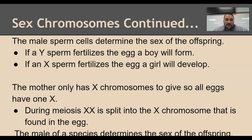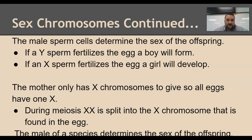The mother only has X chromosomes, so because she has two X's she either gives an X or an X — so every single egg cell the mother produces has an X chromosome. During meiosis, you go from a diploid cell having two copies of every chromosome to a haploid cell having only one copy. No matter what, that egg cell has an X chromosome. During meiosis we go through a second round of division, ending up with two X-chromosome sperms and two Y-chromosome sperms.